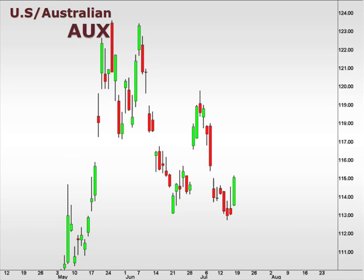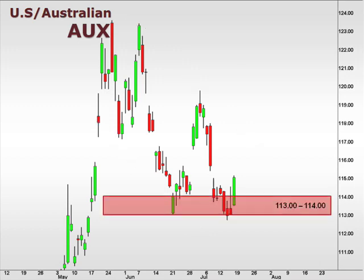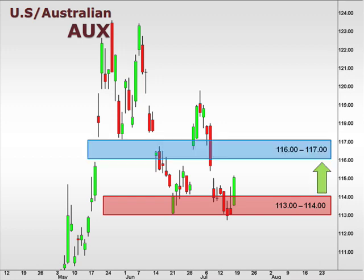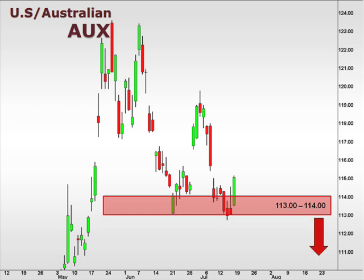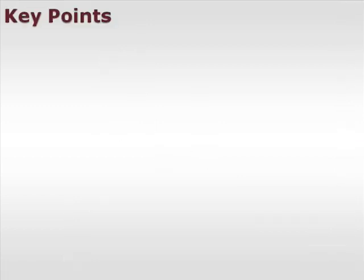The AUX, the U.S. versus the Australian dollar, continues to consolidate in what appears to be a large bull flag. 113-114 is an important support level. With last Friday's break above 114.5, we are anticipating a push towards this 116-117 focal zone. 113-114 is a key support level, and a break below this will open the window for further weakness in the U.S. dollar. Let's take a look at a few of our key points.